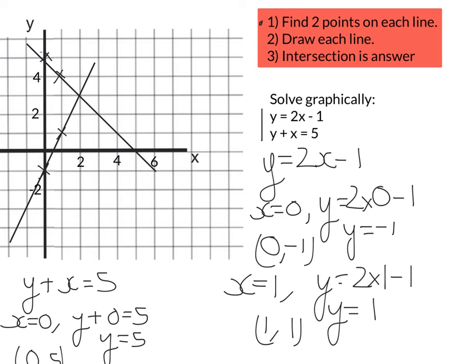The last step is to see where they intersect, which will be our answer. They intersect here, where the two lines meet. That is the point (2, 3). So my answer is (2, 3), or x equals 2, y equals 3.